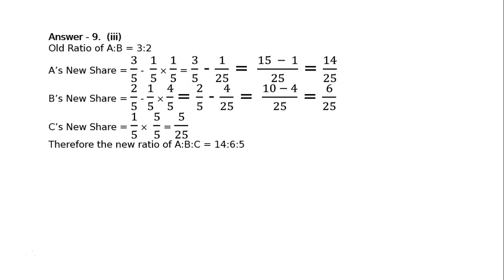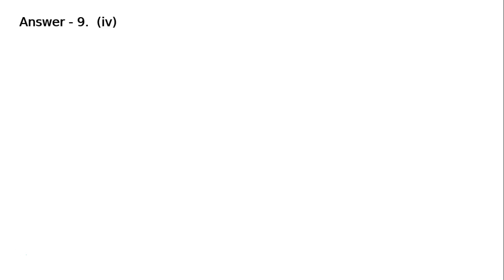C is taking 1/5 but in the ratio of 1:4 — 1/5 he is taking from A, and 4/5 he is taking from B. Fourth part: X, Y and Z are partners in the ratio of 3:2:1. W joins the firm as a new partner for one-sixth share in profits. Z would retain his original share. Old ratio of X to Y to Z is 3:2:1. W is admitted for one-sixth share. Let the total profit of the firm be 1.